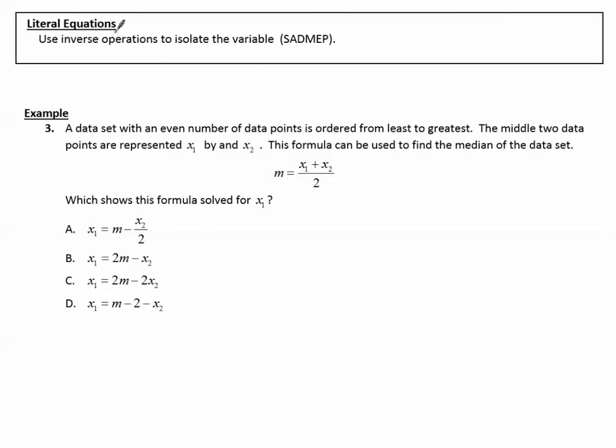Literal equations, that's equations with lots of letters in them, lots of variables. Use inverse operations to isolate the variable, PEMDAS backwards, SADMEP. Example number 3. A data set with an even number of data points is ordered from least to greatest. The middle two data points are represented x sub 1 and x sub 2. This formula can be used to find the median of the data set.